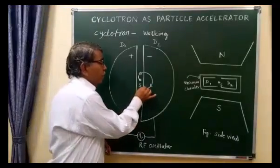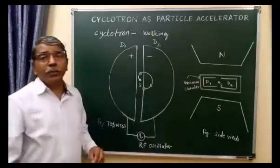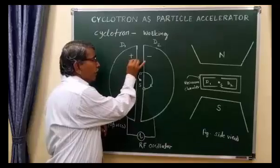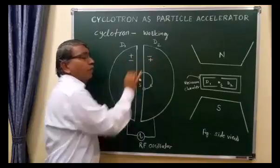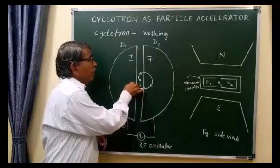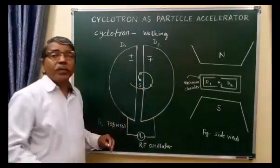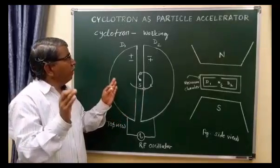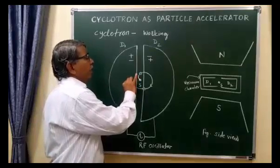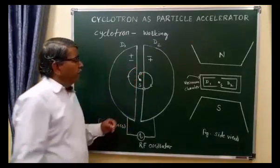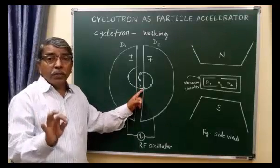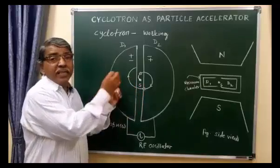Now, when this positive ion comes to the edge of D2, and at that time D1 becomes negative and D2 becomes positive, the positive ion will be attracted towards D1. It will traverse a circular path due to the magnetic field present in the interior of D1. In this case, the positive ion will receive additional acceleration with increasing radius.